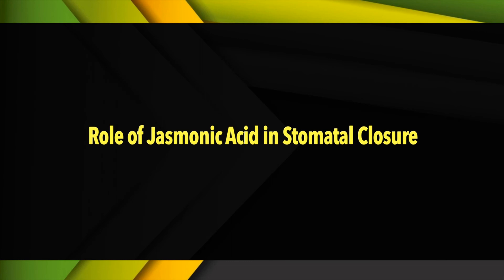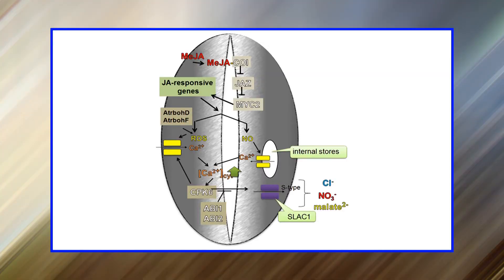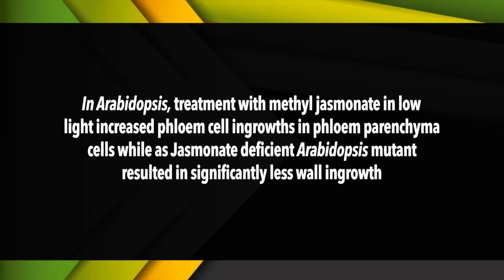Although abscisic acid is the best-known stress hormone that closes stomata, jasmonic acid has also proven effective for the same. It has been found that nitric oxide signaling interacts with jasmonic acid signaling to induce stomatal closure. Regarding phloem cell wall ingrowth development: phloem cells adjacent to phloem sieve elements can possess wall invaginations. In Arabidopsis, treatment with methyl jasmonate in low light increased phloem cell ingrowths in phloem parenchyma cells, while a jasmonate-deficient Arabidopsis mutant resulted in significantly less wall ingrowth. The results suggest that chloroplast oxidative status via chloroplast-derived jasmonates may modulate phloem structure and function.